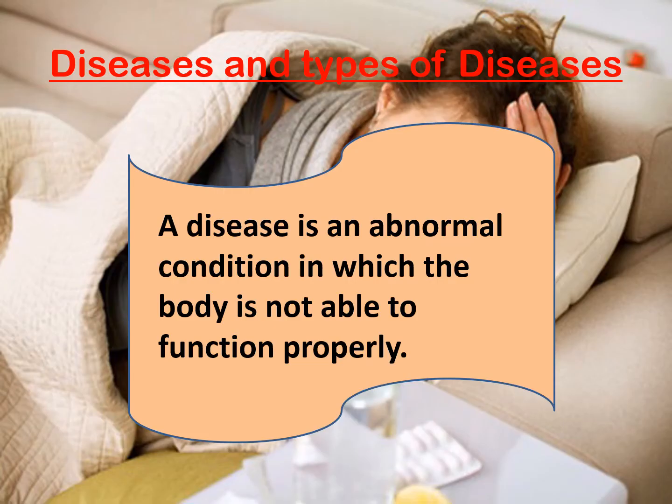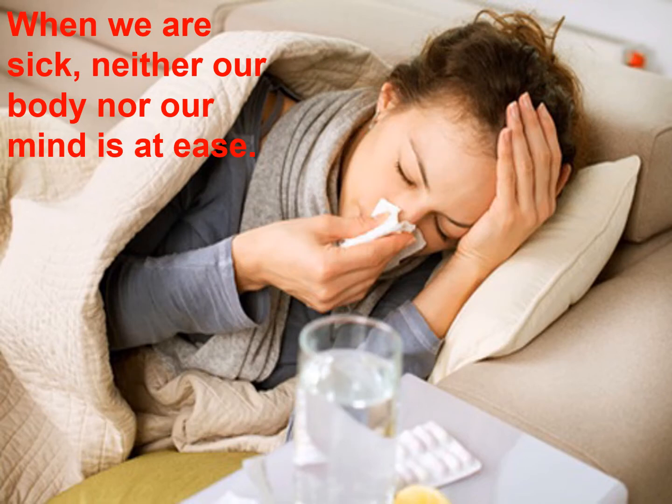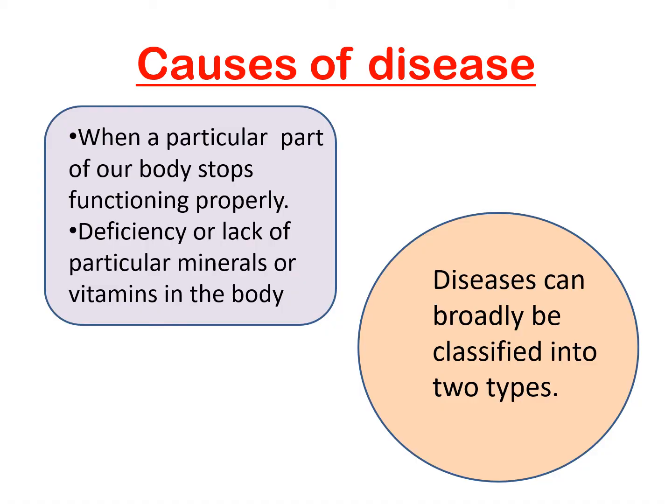Today in Part 3, we will discuss about diseases and their types. A disease is an abnormal condition in which the body is not able to function properly. When we are sick, neither our body nor our mind is at ease. Let's understand the causes of disease. When a particular part of our body stops functioning properly, or there is a deficiency or lack of a particular mineral or vitamin in the body, on this basis, diseases can be classified into two types.